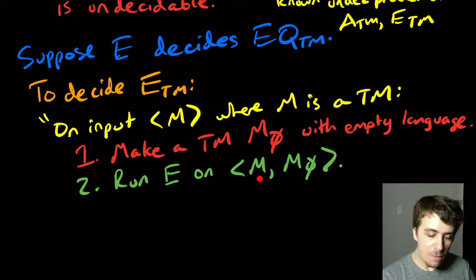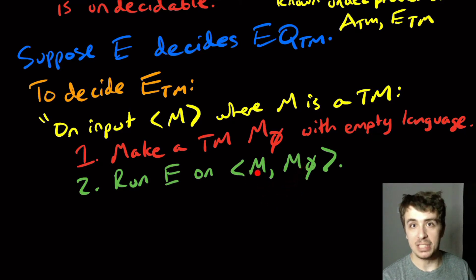Well, if M has empty language, then E is going to say yes, they have the same language. If M does not have the empty language, well, these two are not going to be the same, and E is going to report that they're not the same.